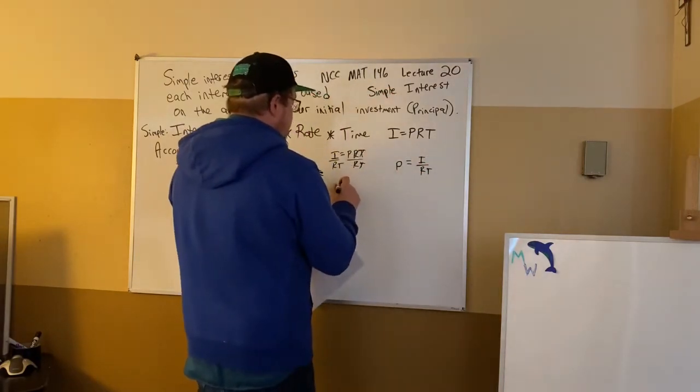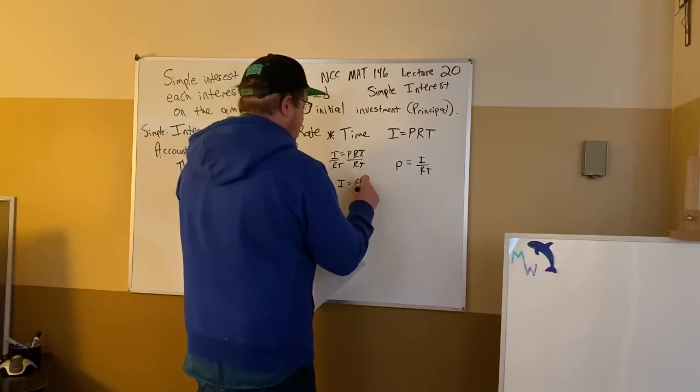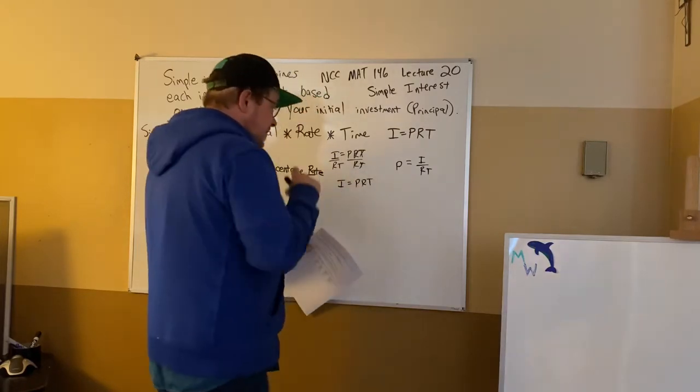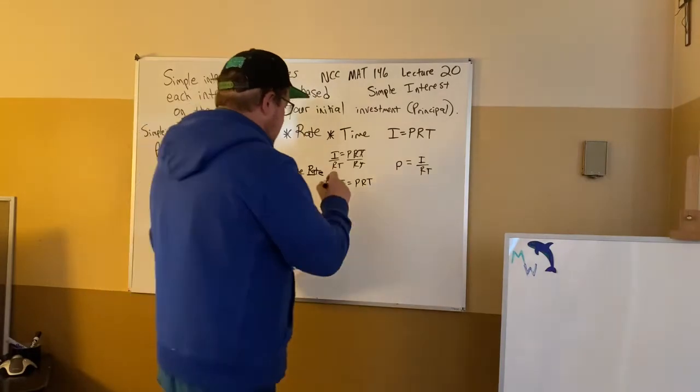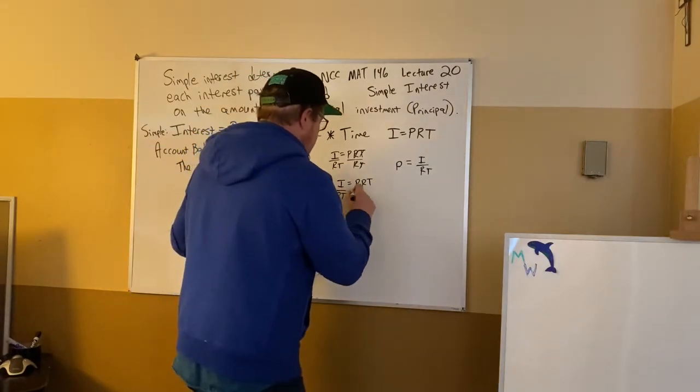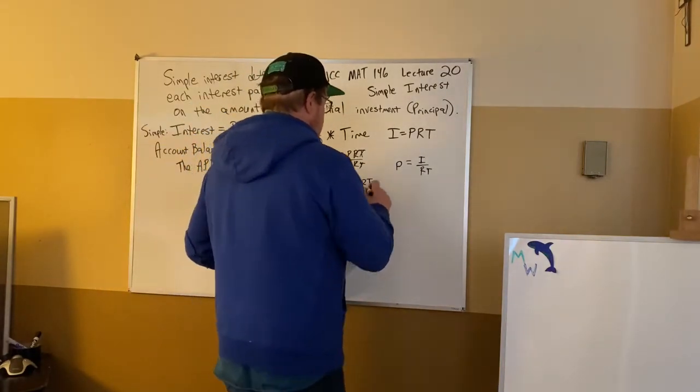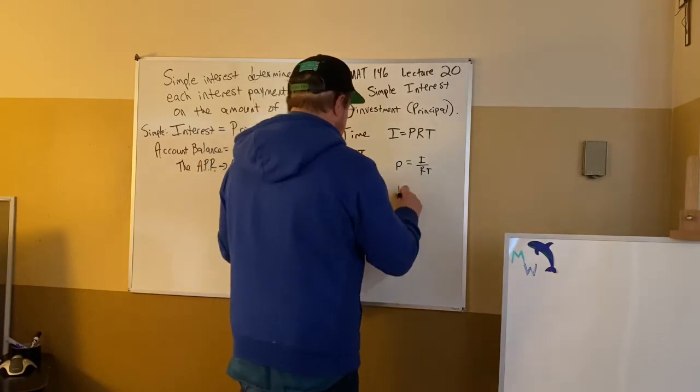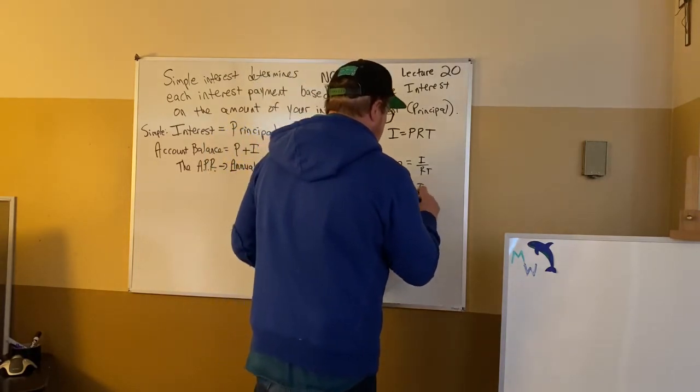I can take my I equals PRT. And if I wanted to determine my R, I would divide both sides by PT. And get these out of here and we're going to get that R equals I over PT.